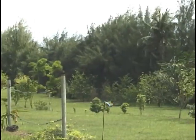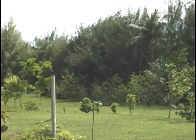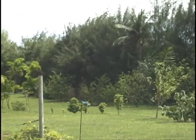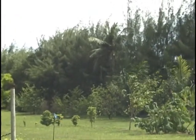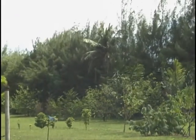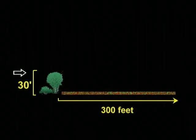Windbreaks reduce wind speed for a distance of about 10 times their height. For example, a windbreak with trees 30 feet tall will protect a field area up to 300 feet downwind.